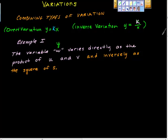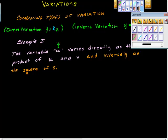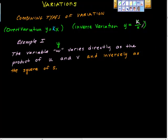Okay, I'd like to continue our conversation on variations. We've been talking about direct variation and inverse variation, and I want to talk about the idea of combining types of variations. Direct variations come in the general form y equals kx, and inverse variations come in the form y equals k over x, remembering that this k is the constant of variation.